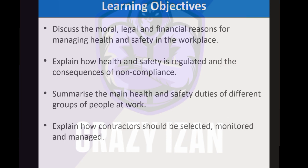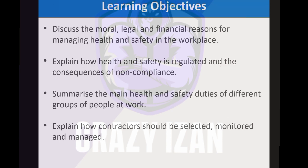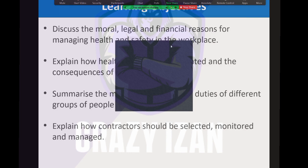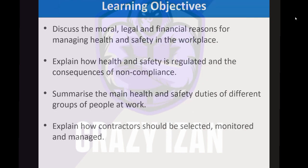The main learning objectives of this chapter are: first, to discuss the moral, legal, and financial reasons for managing health and safety in the workplace. When working in the health and safety profession, someone might ask why safety is important or why we need to spend money on it. As a health and safety professional, you must be able to give professional and sustained arguments to convince them why health and safety is necessary.